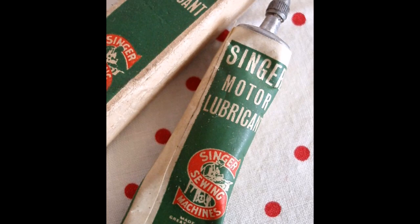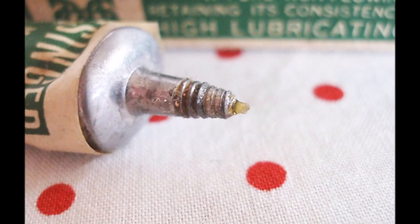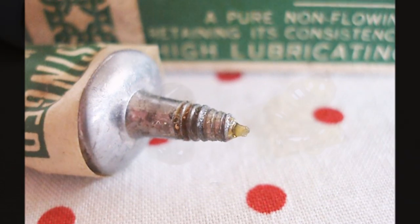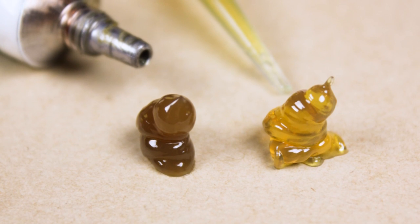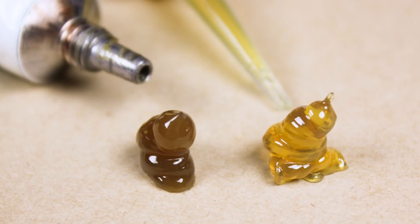Original Singer lubricant from the era of the Featherweight is a basic non-flowing, low melting point grease. Non-flowing, meaning that it will generally stay where it is put, and low melting point, meaning under low heat, the lubricant will gradually melt and be reduced to its basic lubricating properties.